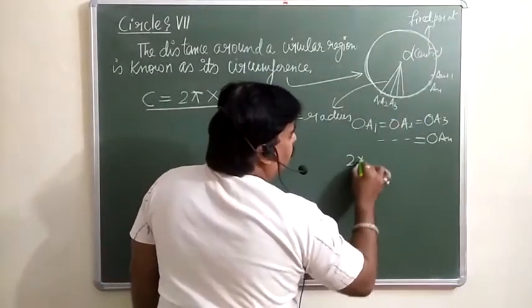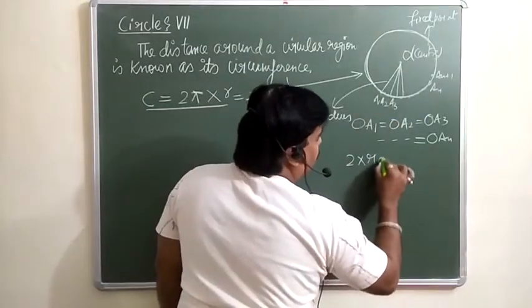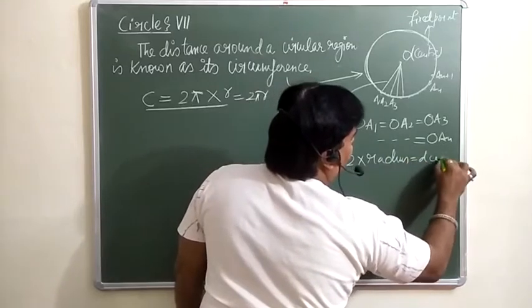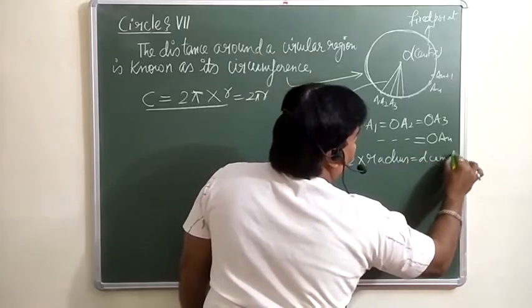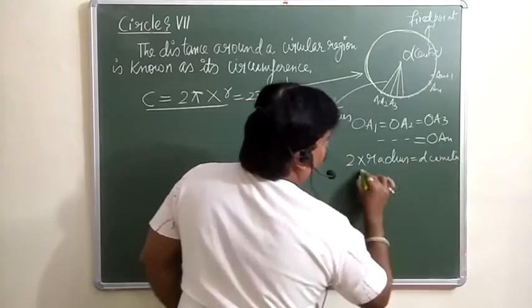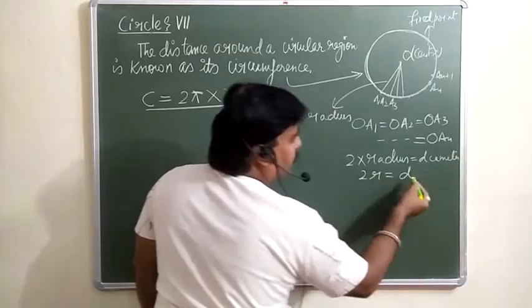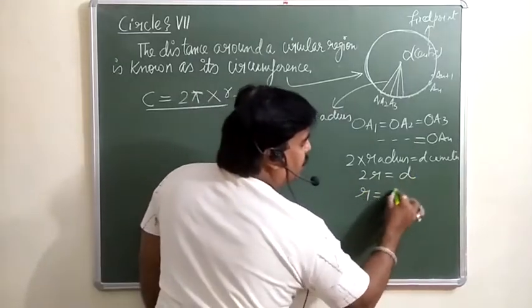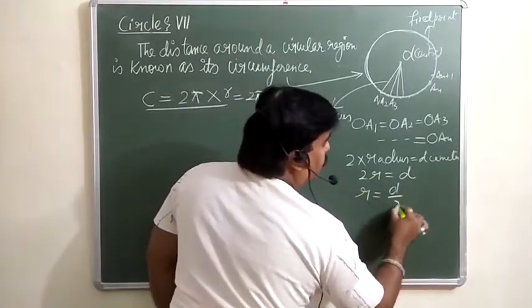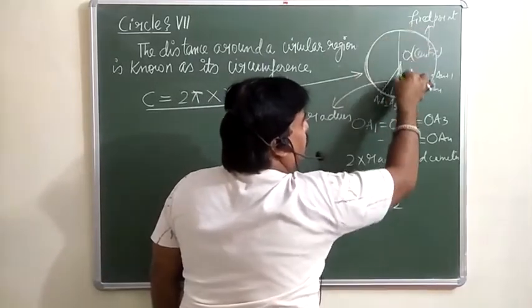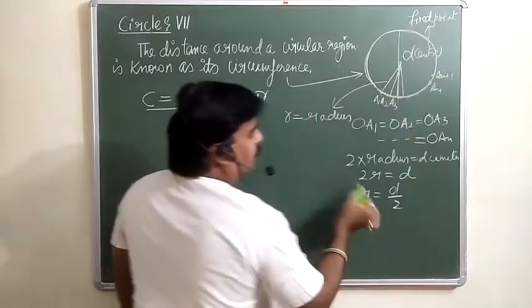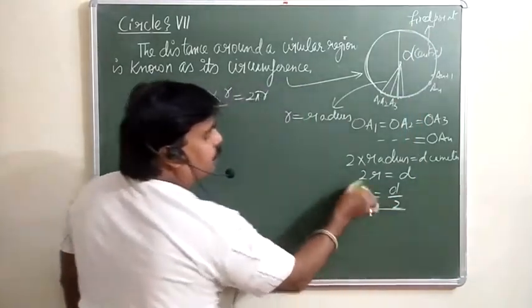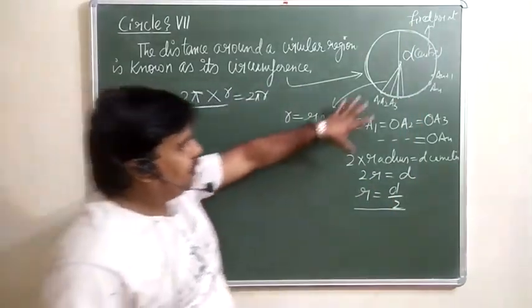Twice the radius is known as the diameter. So 2R = D. Sometimes the diameter is given; in that case, radius equals D divided by 2. If you know the diameter, you can calculate the radius.